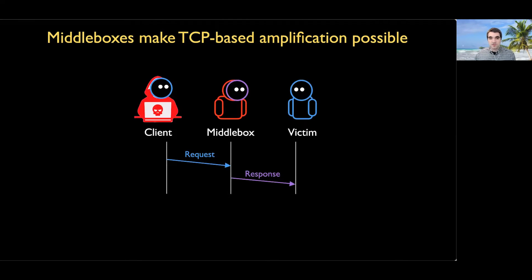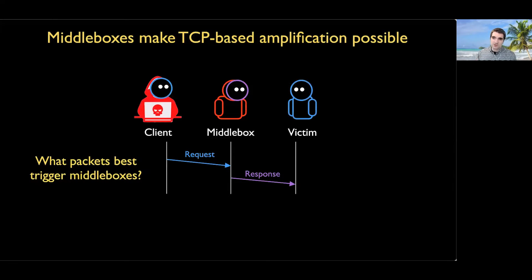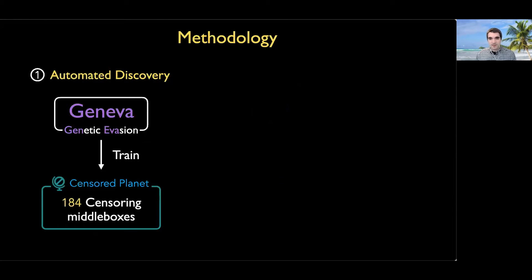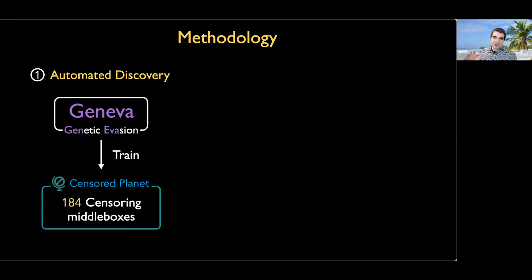This leaves us with two questions. First, what is the best way to trigger these middleboxes? As we'll see, it's often not enough just to send the request — you often need to do a little bit more work than that. And second, what kinds of amplification factors can this attack give us? To answer this, our methodology consisted of two broad stages. First, we needed a way to automatically discover ways to trigger responses from these middleboxes. We're taking advantage of flaws in TCP implementation, not in the protocol design of TCP itself — so we need to study real implementations of TCP in these middleboxes.